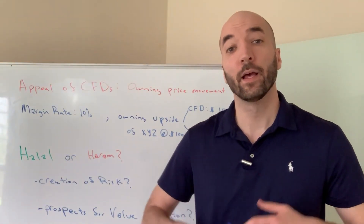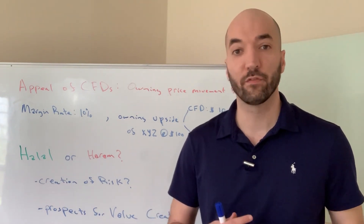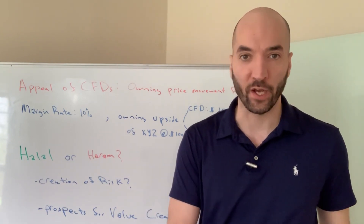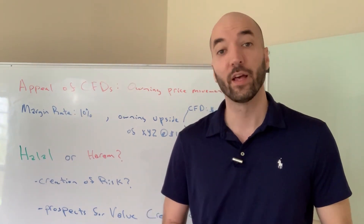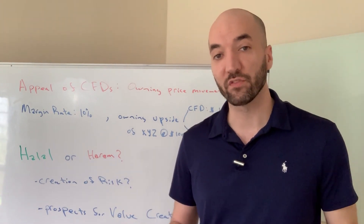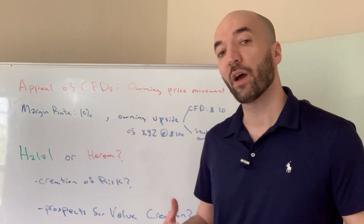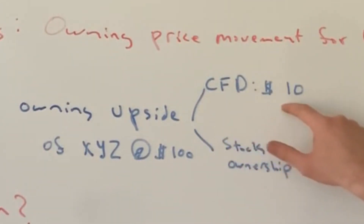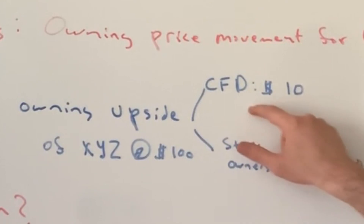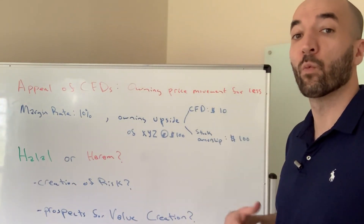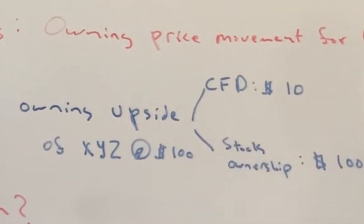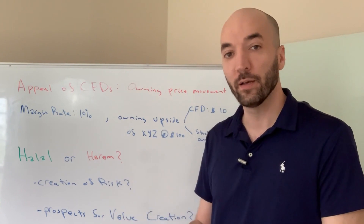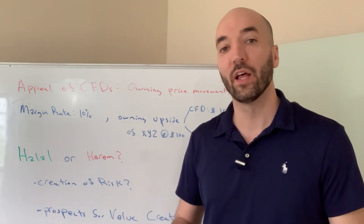The appeal of CFDs is the fact that in order to own the price movement of the underlying asset, you don't have to put up as much money as you would if you owned the underlying asset outright. Going back to our example, if the margin rate for CFDs on XYZ stock is 10%, all I need to put up is 10% of XYZ's share price — which is $10 — whereas owning XYZ outright would require $100. So I'm owning the price movement for a lot less money.